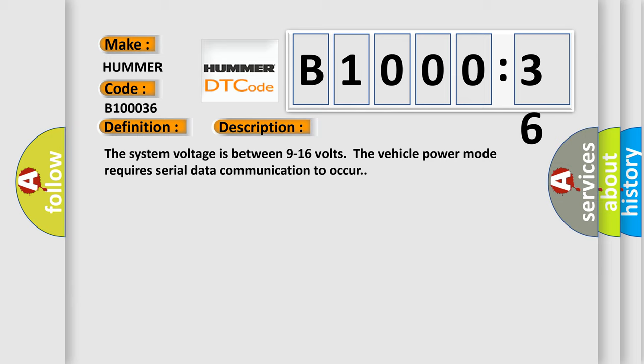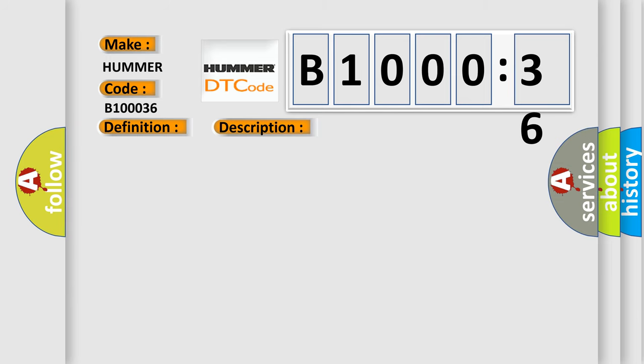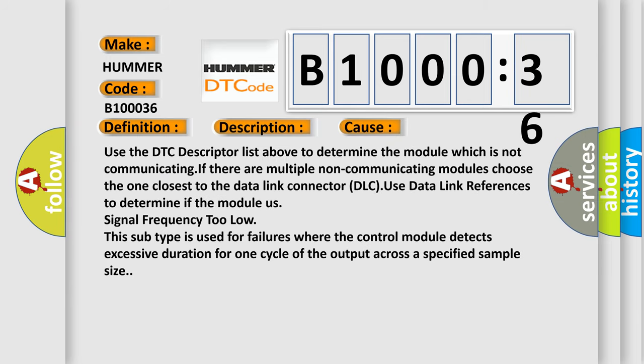This diagnostic error occurs most often in these cases: Use the DTC descriptor list above to determine the module which is not communicating. If there are multiple non-communicating modules, choose the one closest to the data link connector DLC. Use data link references to determine if the module is signal frequency too low. This subtype is used for failures where the control module detects excessive duration for one cycle of the output across a specified sample size.